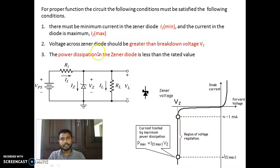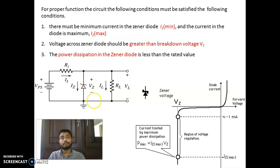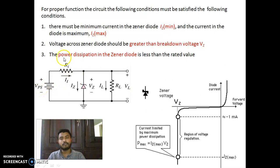The second condition — actually this is the first condition — is that the voltage across the Zener diode should be greater than the breakdown voltage. The applied voltage VPS has some amount dissipated across RI, and the remaining voltage is dissipated across the Zener diode. That voltage should be greater than the breakdown voltage; only then will the diode act as a voltage regulator.